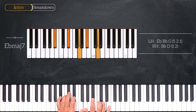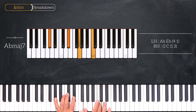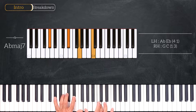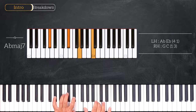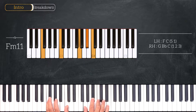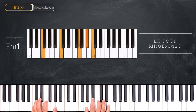Then we'll play this A-flat major 7. Here we are on the sixth degree of the scale — 1, 2, 3, 4, 5, 6 — and we're playing A-flat, E-flat on the left hand and G, C on the right hand. We'll finish this chord progression by playing this F minor 11 chord, playing F, C on the left hand and G, B-flat, C. For a quick reminder, we are on the fourth degree — 1, 2, 3, 4.